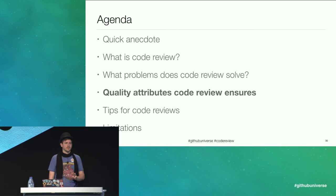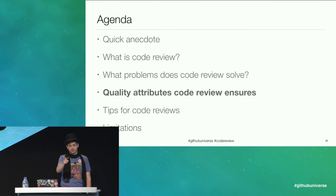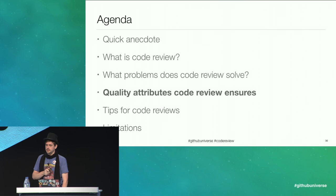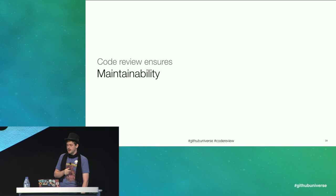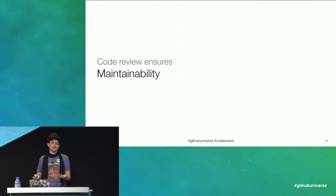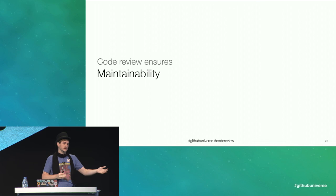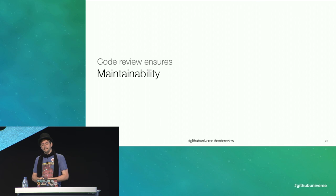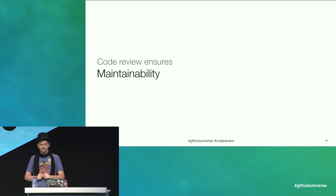Let's talk about three specific quality attributes that code review ensures. If you value these quality attributes in your architecture — and you should — then you should most definitely be doing code reviews. When the original authors of a project move on from that project, who's going to care for it? People are not forever. They move on to other projects, they leave the company, they win the lottery, or get hit by a bus. It's vital that an architecture values maintainability, so let's talk about that first.